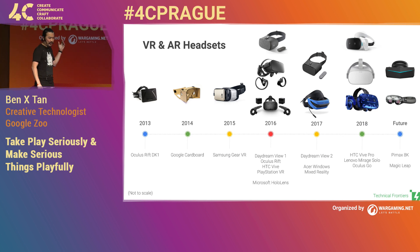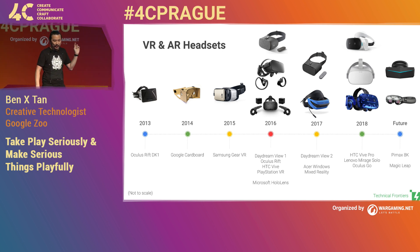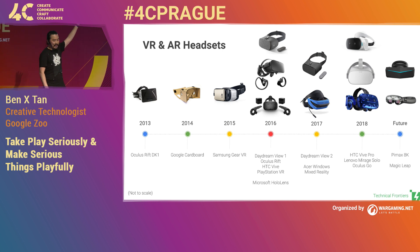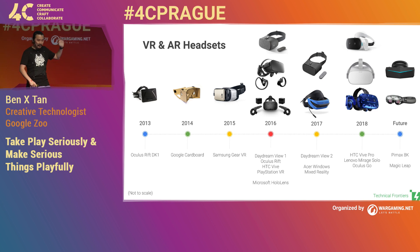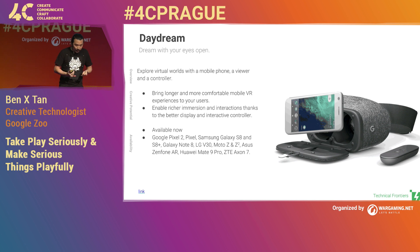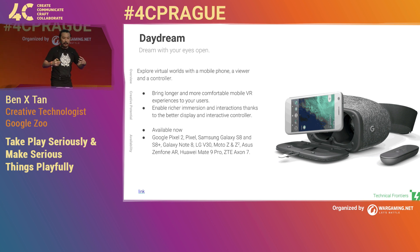The first DK1 by Oculus came out in 2013 — five years ago — and we've gone through a long journey of all different kinds of headsets. At Google, we have the Daydream. The idea was to make it out of material, make it softer, because it is a wearable and has to be comfortable. With the Daydream you put a mobile phone in it; the headset itself has no technology inside. There is a hand controller with a three degrees of freedom system.